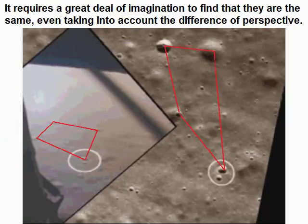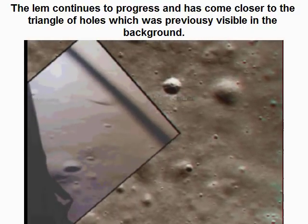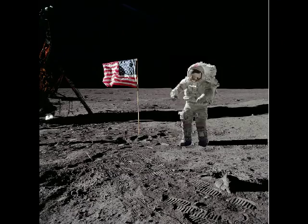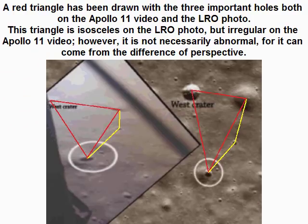It requires a great deal of imagination to find that they are the same, even taking into account the difference of perspective. The LEM continues to progress and has come closer to a triangle of holes which is precisely visible in the background. Several holes have been circled with corresponding colors on the Apollo 11 video and the LRO photo — once again, there can be no mistake, as the holes are successively circled along the video. A red triangle has been drawn with three important holes both on the Apollo 11 video and the LRO photo.